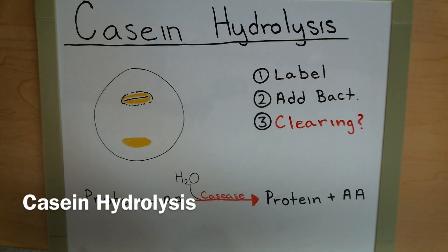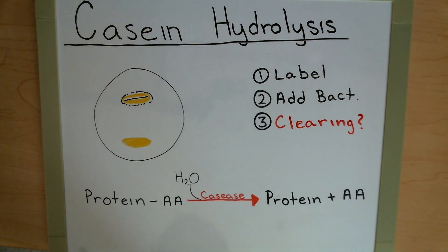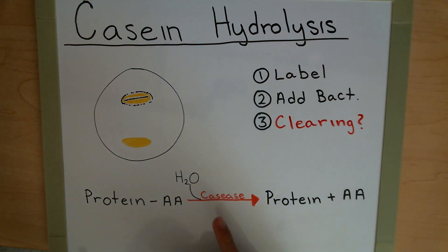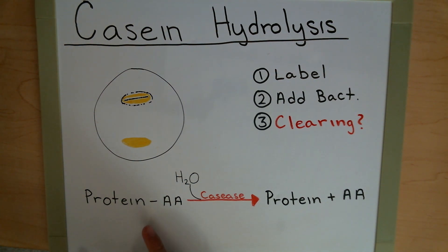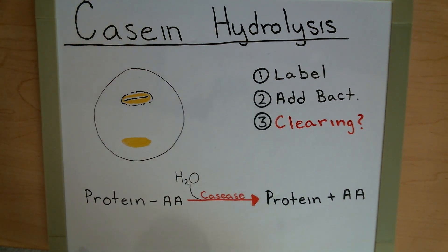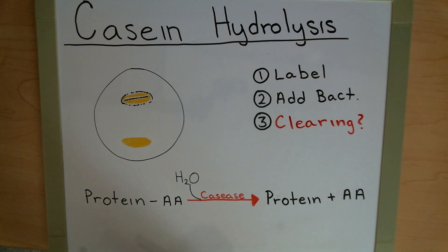With casein hydrolysis we're looking for the presence of casease, which is an enzyme that breaks down casein. Casein is the protein found in milk and it gives milk its white color. When casease and water work together in the presence of a protein, they're able to break the amino acid bonds. Proteins are an accumulation of amino acids, with each amino acid bound to the next, and casease in the presence of water breaks down that protein.